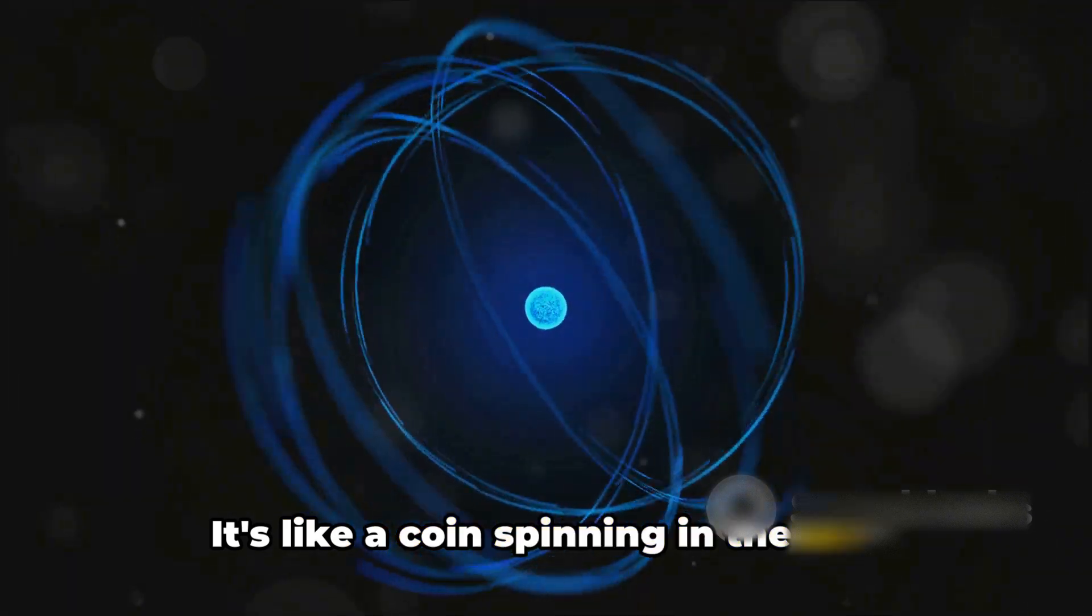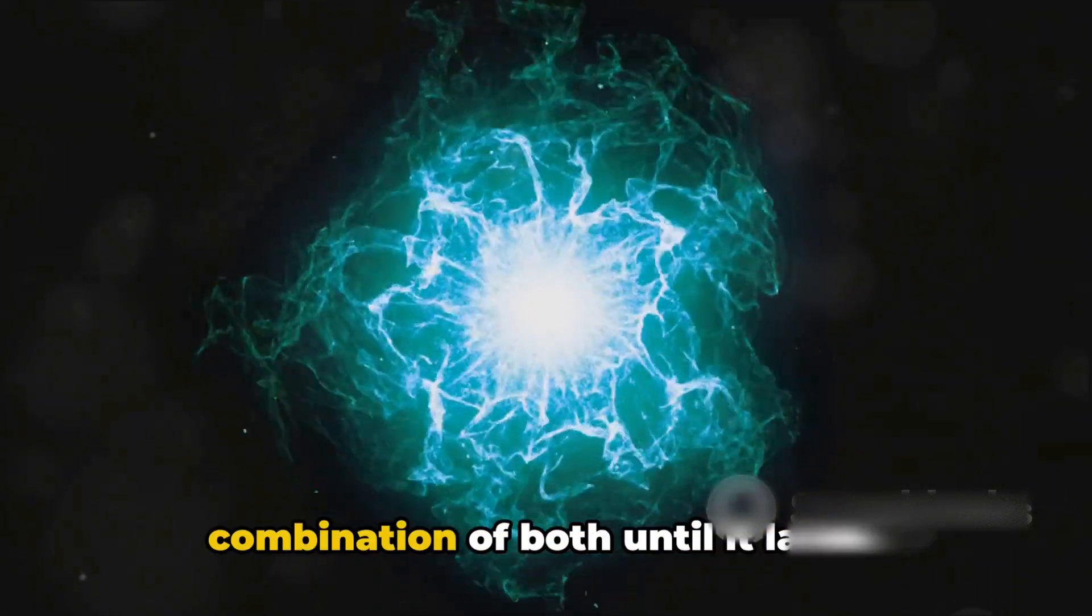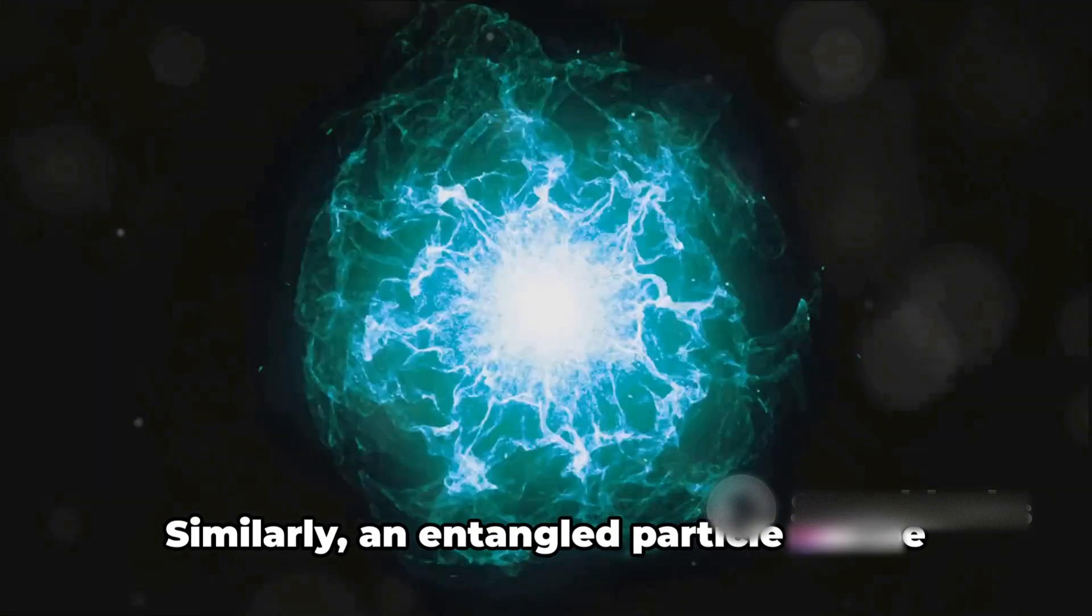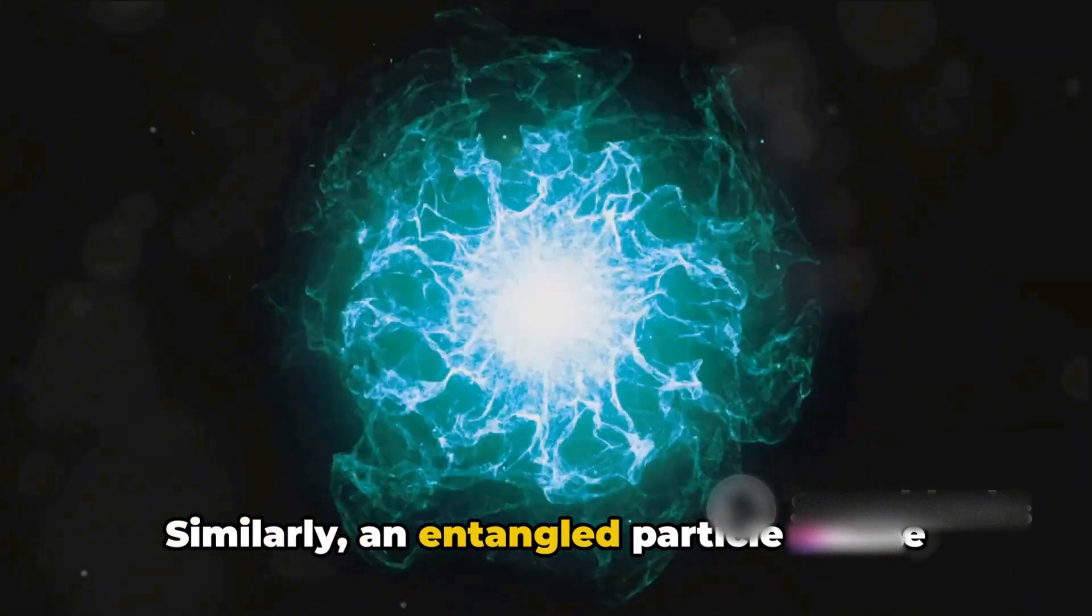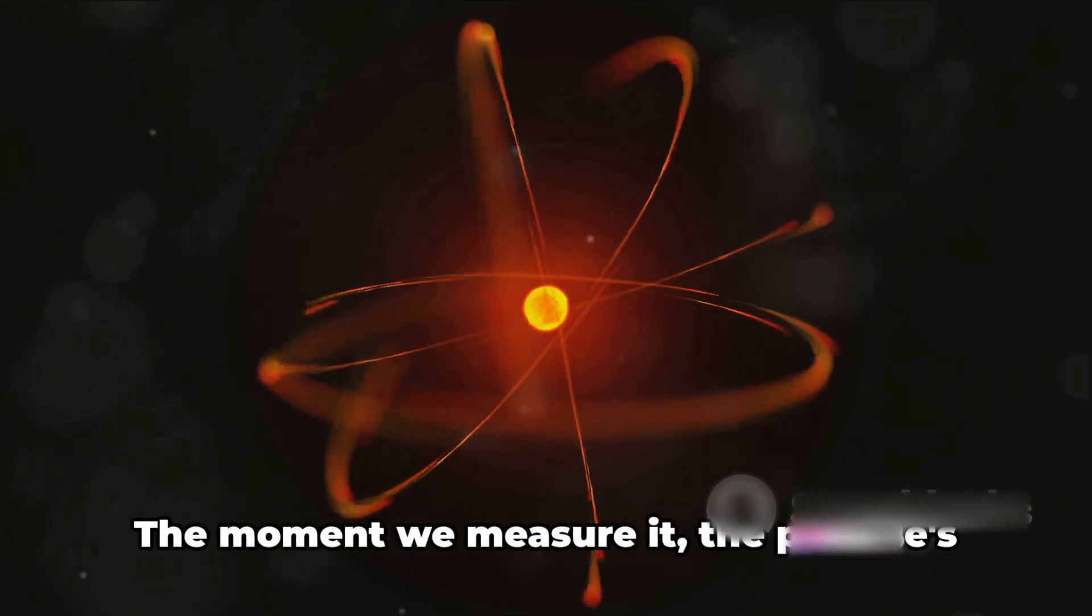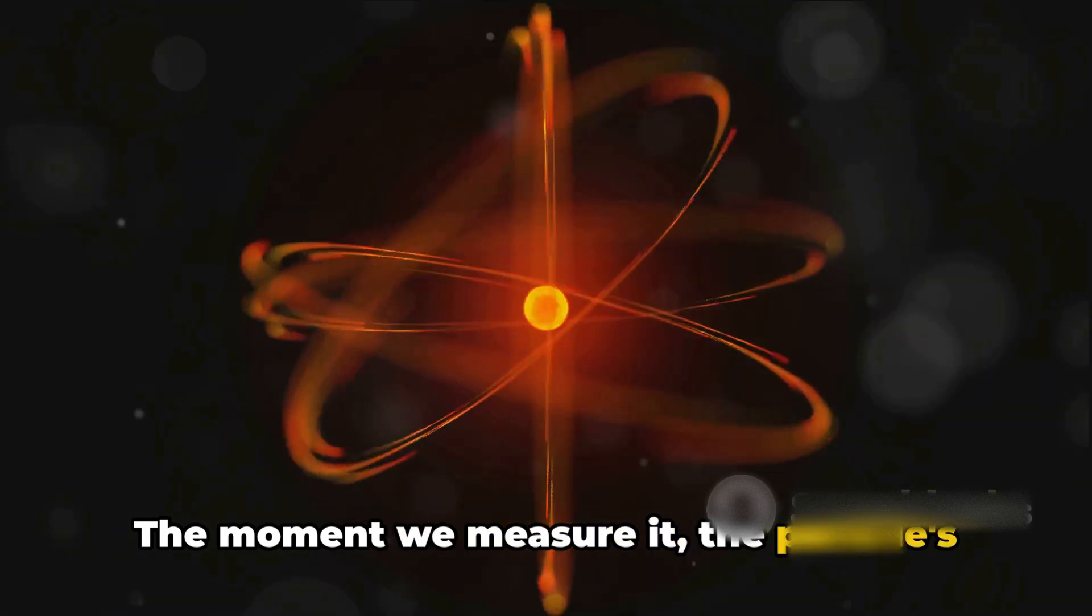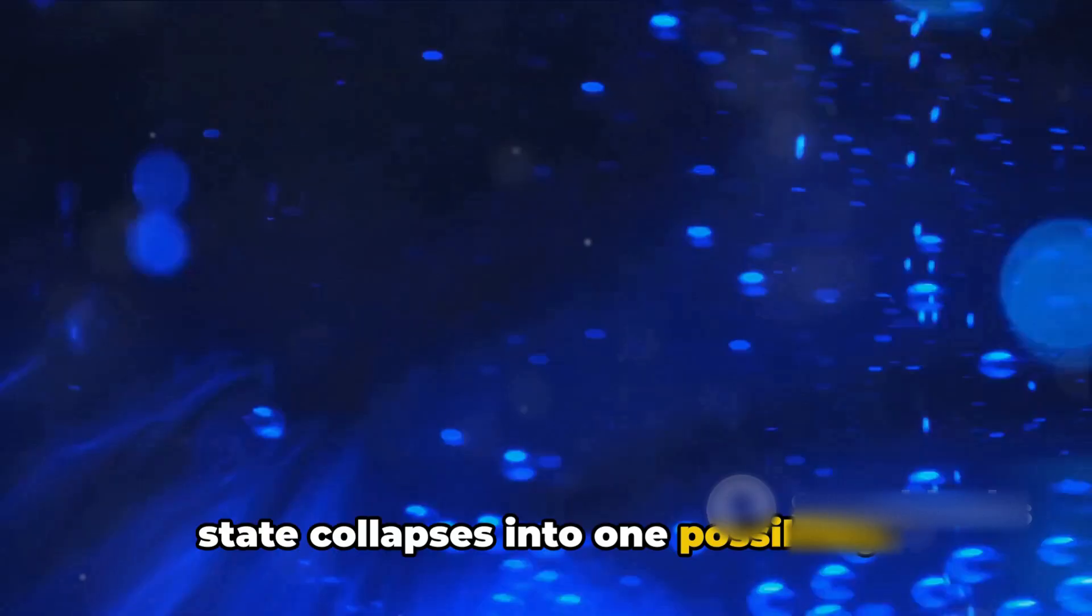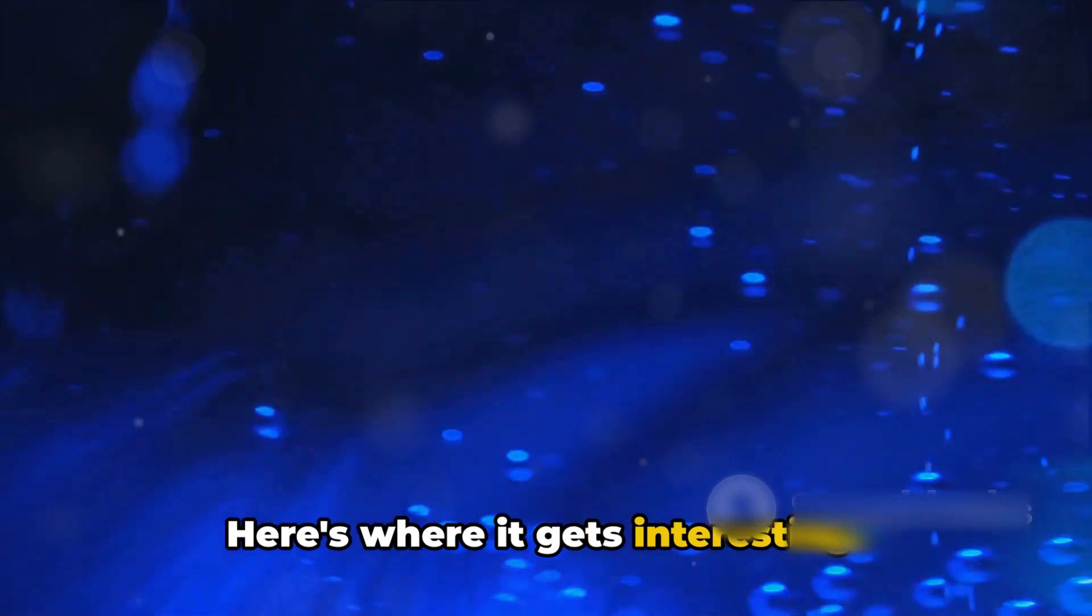It's like a coin spinning in the air. It's neither heads nor tails, but a combination of both until it lands. Similarly, an entangled particle can be in a superposition of states until it is measured. The moment we measure it, the particle's state collapses into one possibility.